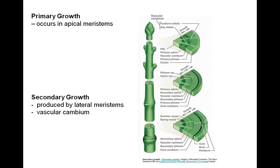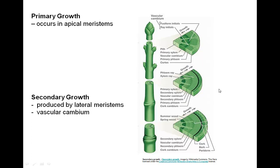Secondary growth is produced by lateral meristems. The vascular cambium is found between the phloem and xylem vascular tissues in dicots, and is a lateral meristem.